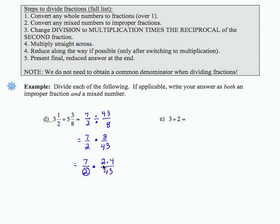43 is actually a prime number, so we're not going to have any common factors there. So that leaves me with 7 times 4 is 28 over 43, and that is my final simplified result.